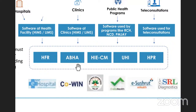ABHA stands for Ayushman Bharat Health Account — earlier called Health ID, now called Health Account Number. Everyone who registers will be given a 14-digit unique number. Whenever you avail healthcare services, you share your ABHA number with the service provider. Whether you go to a hospital, diagnostic lab, or clinic, all those records — prescriptions, diagnostic reports, health records — will get linked to you through this unique ABHA number.